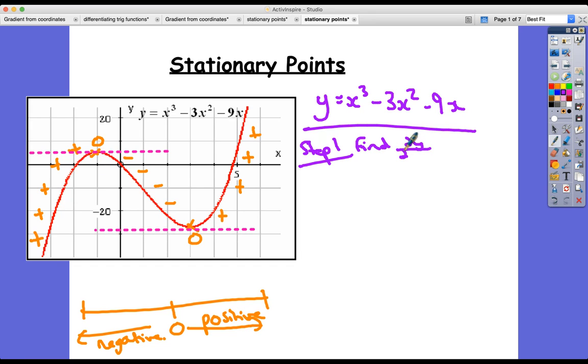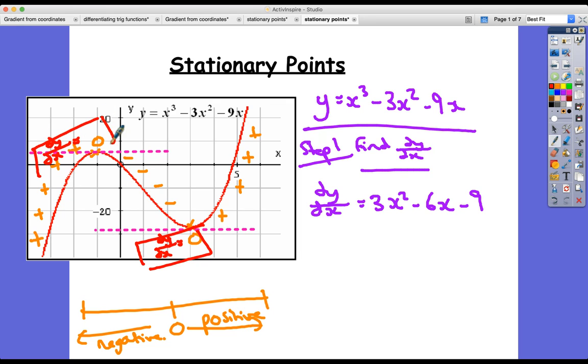dy/dx, find the gradient function. So dy/dx in this case, it's like second nature now doing this: 3x² - 6x - 9. Now we know that at these particular points dy/dx equals zero because they're stationary points. So if dy/dx equals zero at these points, therefore it's the case that 3x² - 6x - 9, which is dy/dx, is equal to zero.